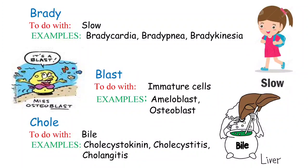The next term is 'chole,' related to bile. Bile is a fluid produced by the liver that helps in digestion of lipids in the small intestine. Examples include cholecystokinin — a hormone that stimulates the release of bile into the intestine; cholecystitis — where gallstones block the tube from the gallbladder to the small intestine, causing bile to build up and resulting in inflammation.